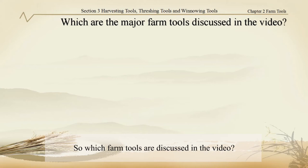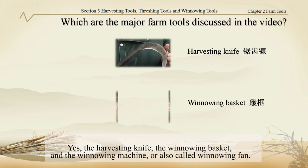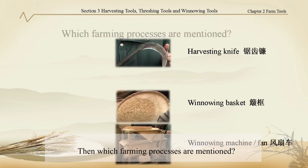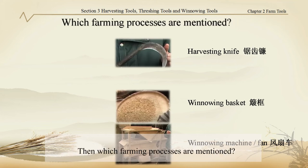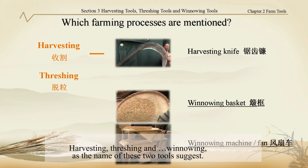So which are the major farm tools discussed in the video? The harvesting knife, the winnowing basket, and the winnowing machine, also called the winnowing fan. Then, which farming processes are mentioned? Harvesting, threshing, and winnowing, as the names of these two tools suggest.